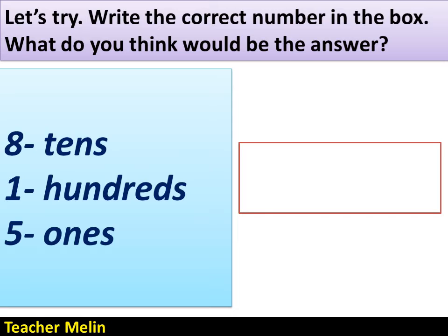Let's try. Write the correct number in the box. What do you think would be the answer? 8 tens, 1 hundred, and 5 ones. The correct answer is 185.